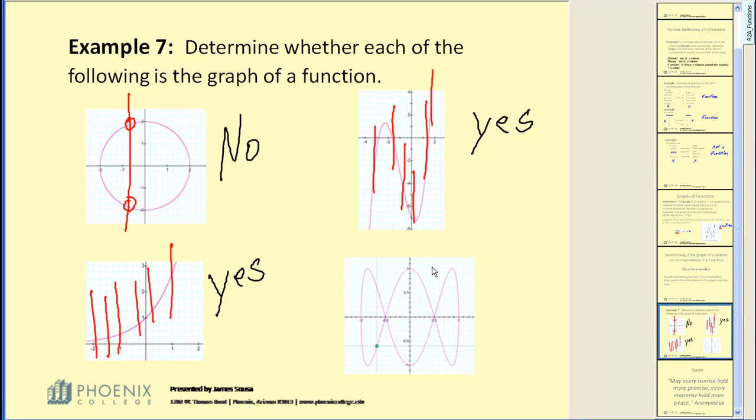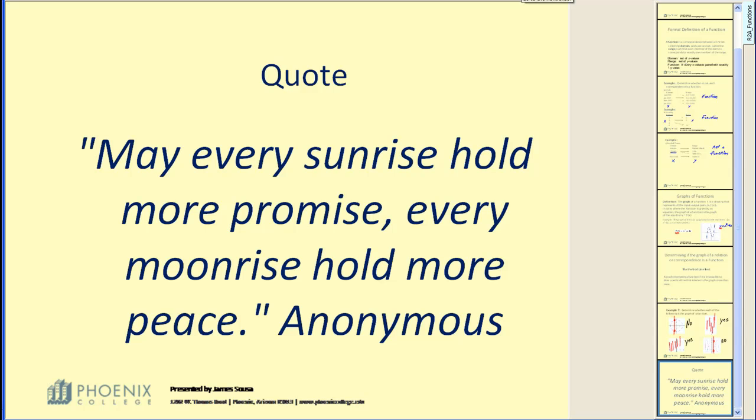This last graph, if I draw a vertical line here, I just crossed the graph in more than one point. In fact, two points. Therefore, it fails and it is not a function. I hope that helps explain how to determine if a relation is a function.